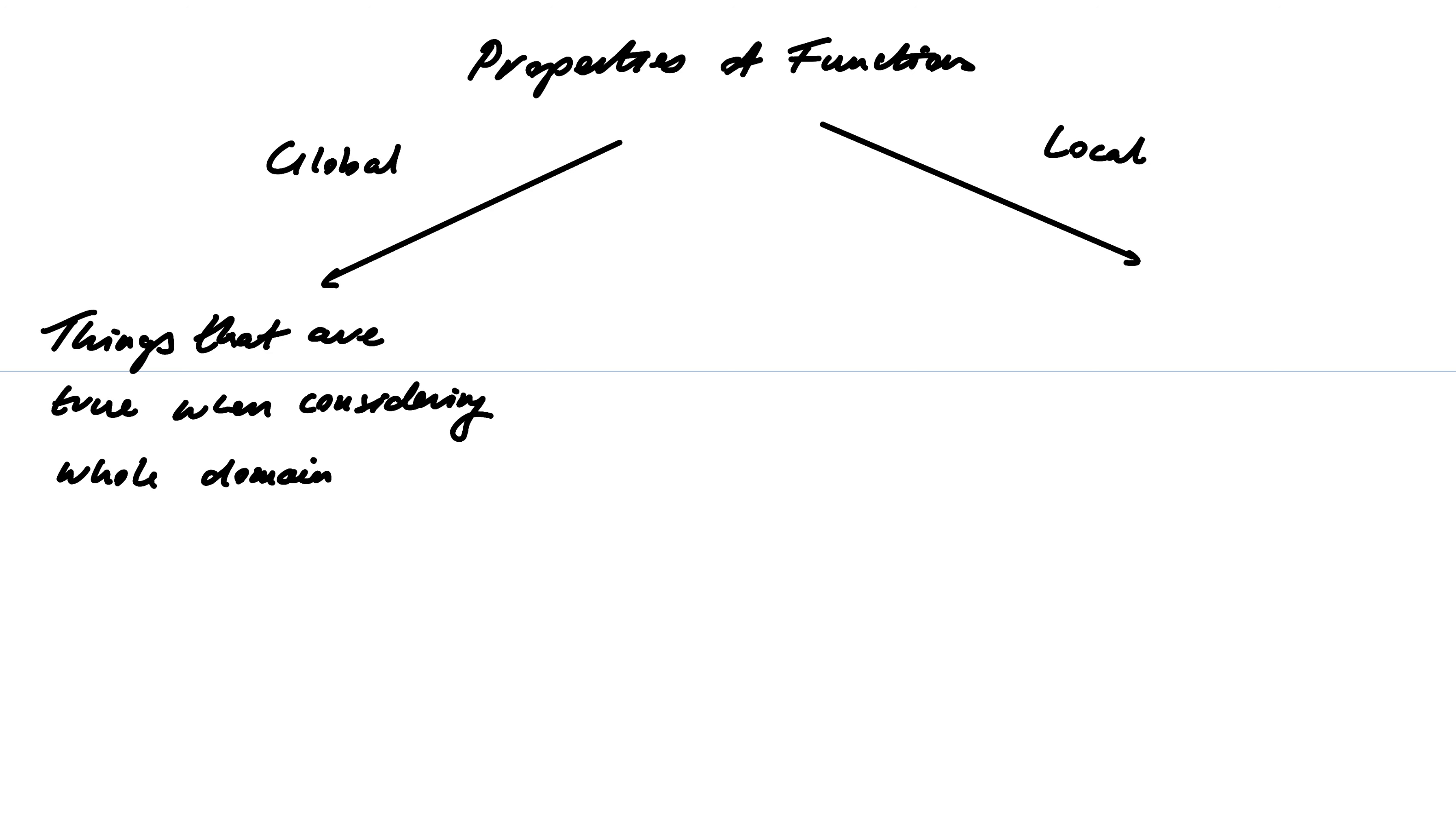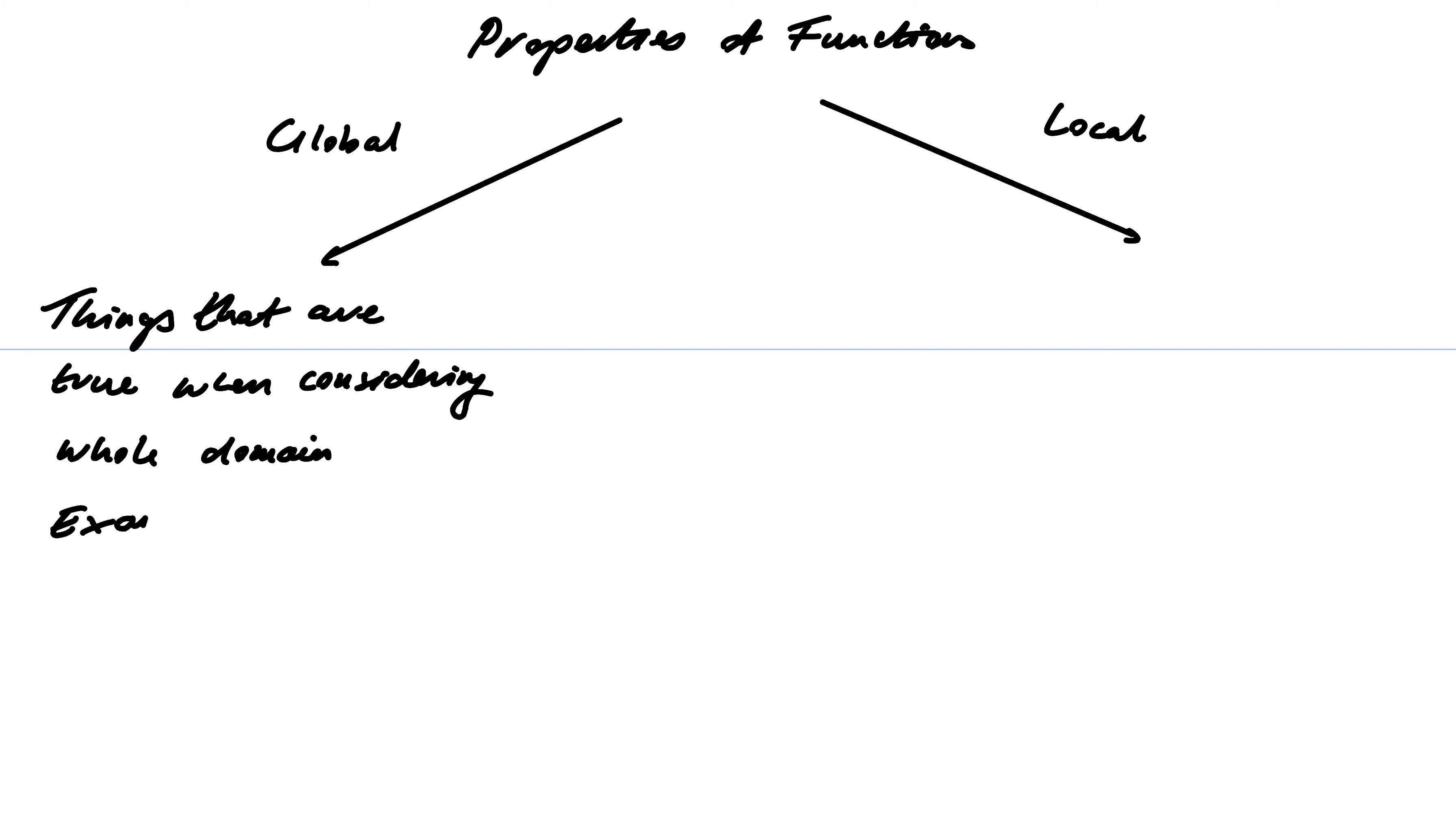So the concept of being increasing or decreasing, so example. Those are global properties in the way I've explained them. Okay, so f decreasing is global.